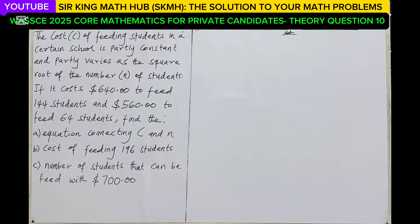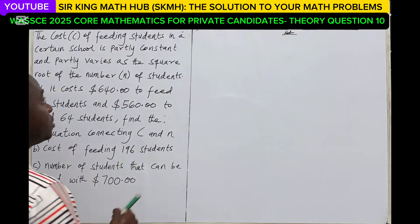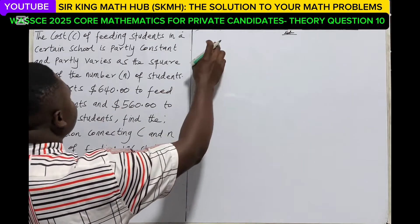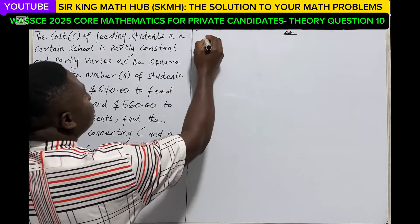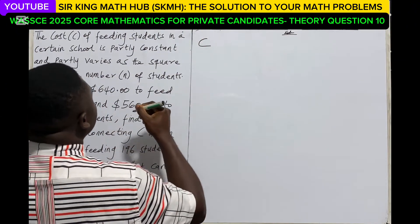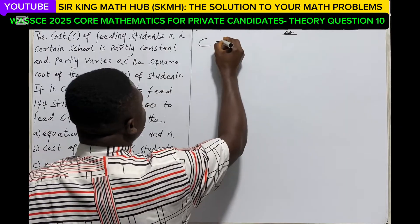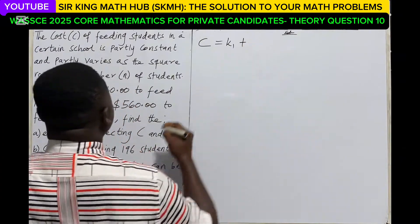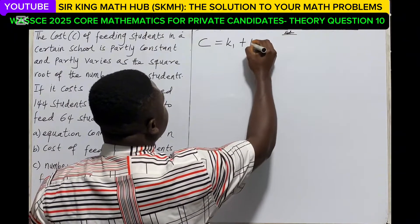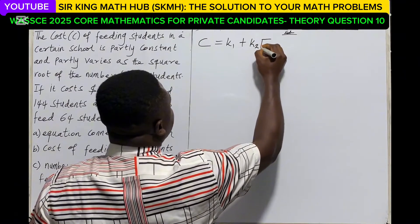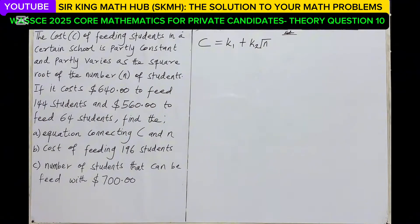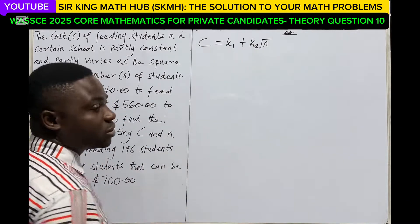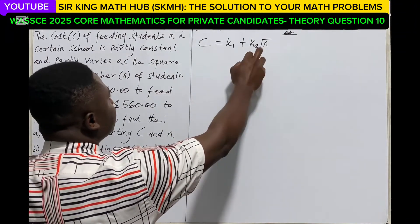The cost of feeding students in a certain school is partly constant and partly varies as the square root of the number of students. Let's represent this information in equation form. The cost represented as C is partly constant — this is the first constant — and partly varies as the square root of the number of students. C represents the cost and N represents the number of students. Because there is partial variation, there will be more than one constant: K1 for the first constant and K2 for the second constant.